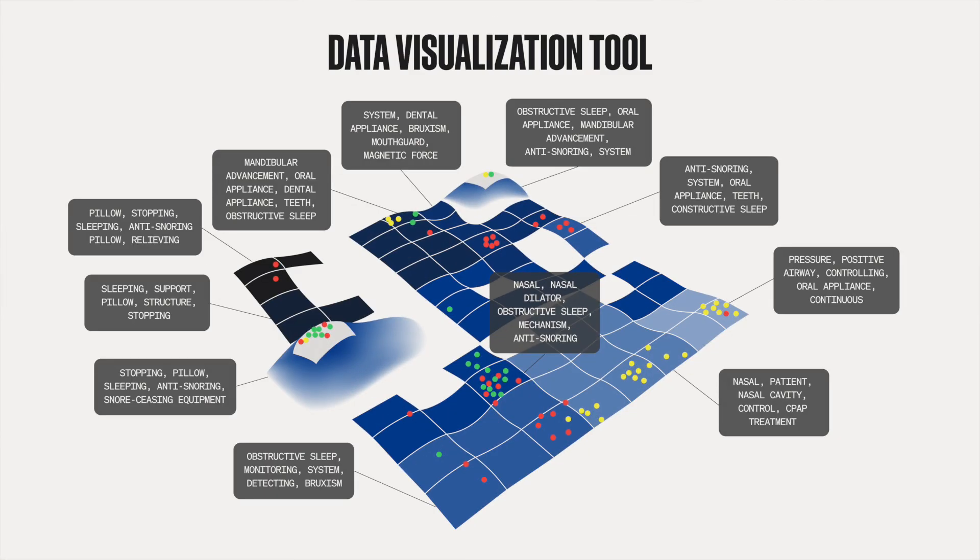Our second tool is a data visualization tool. This tool helps us figure out quickly whether we're going to be in a crowded space or in a blue ocean space, and whether the scope of the patent ought to be broad or narrow. It also helps us figure out whether it's worth patenting — if you're going to be one of several patents in one particular space, it may not be worth it, because everyone in that space will become commoditized unless your product is very differentiated.